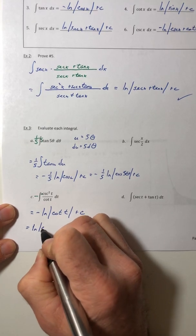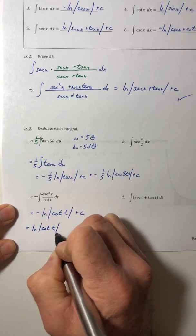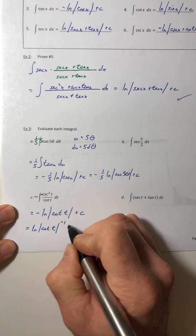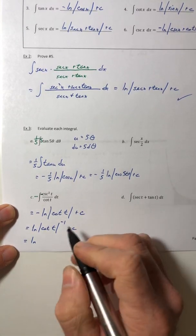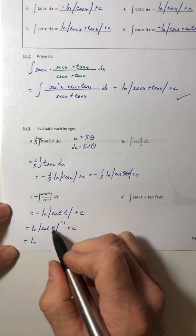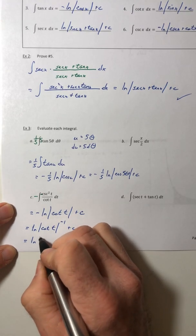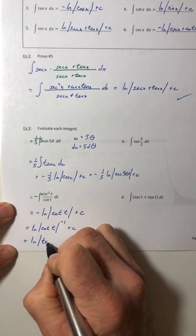So you can pull that negative, the negative one up to be the exponent. And then the negative one will take the reciprocal of cotangent and make it tangent.